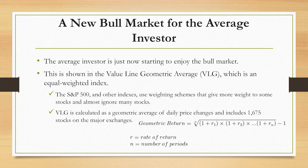This is shown in the Value Line Geometric Average, which is an equal-weighted index that uses a geometric average to calculate the returns. Here's the formula for that average — we're taking the nth root of the product of the daily returns of the stocks.